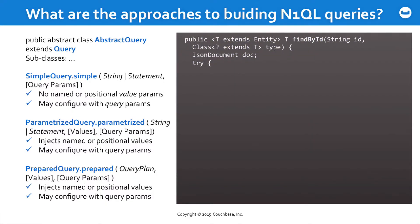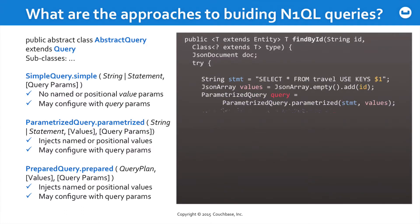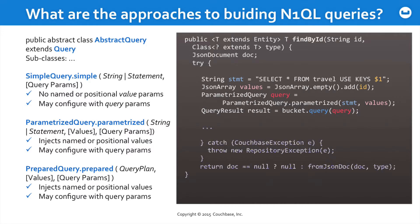So it might look something like this. You just created a find-by-ID method in the last lab, and there's a document ID being passed in as a string. Here we're taking that ID and instead of writing it directly into a statement, we're putting in a positional variable $1, then creating a JSON array using an empty constructor method — this type is part of our SDK — and adding our value into it. Those values are passed as a second parameter to the parameterized method along with the statement, giving back a query object. That query object is passed to the query method of the bucket, and you get back a QueryResult.